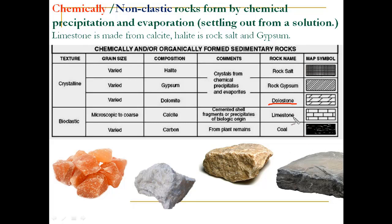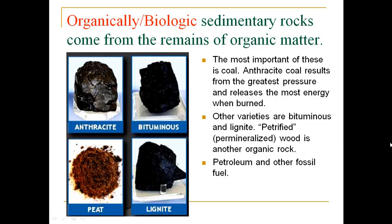Limestone and coal are mainly formed due to the dead remains of plants and animals. Biologically formed sedimentary rocks come from the remains of organic matter. The best examples are the different types of coal: anthracite, bituminous, lignite, and peat. Anthracite coal results from the greatest pressure and releases the most energy when burned, giving it the highest calorific value. Other examples include petrified or permineralized wood. Petroleum and other fossil fuels are mainly formed due to the fossilization of marine organisms. Organically formed sedimentary rocks are also called biologically formed sedimentary rocks, and are mainly formed under freshwater conditions on the continents.